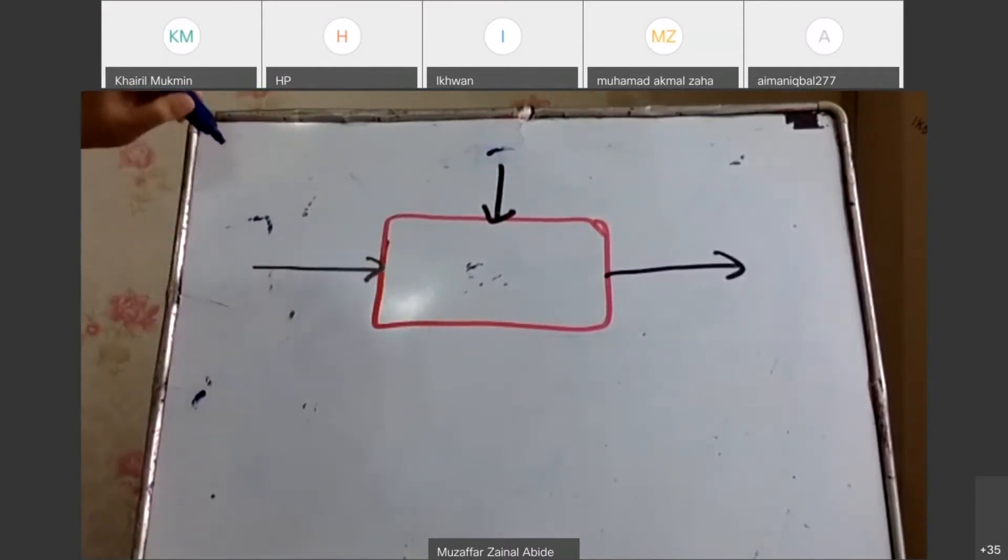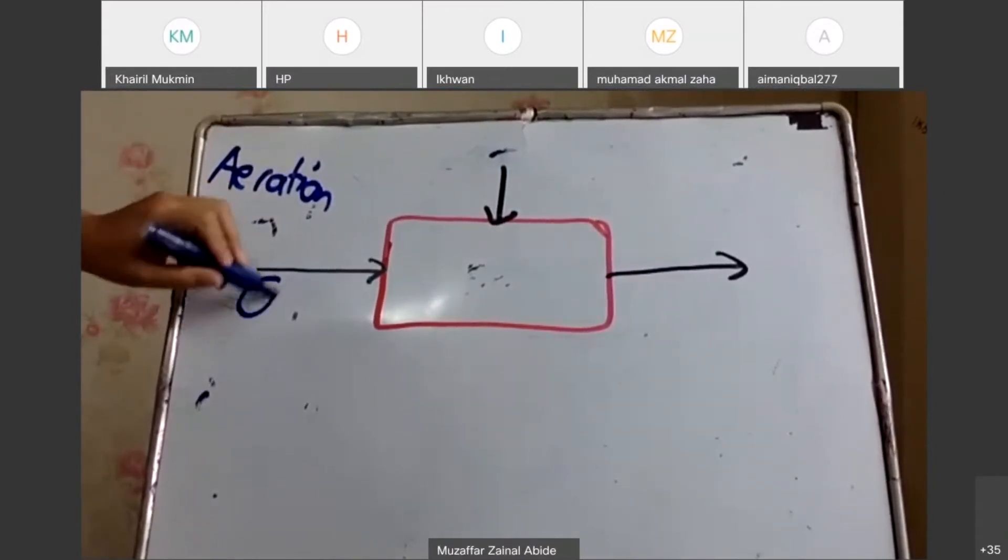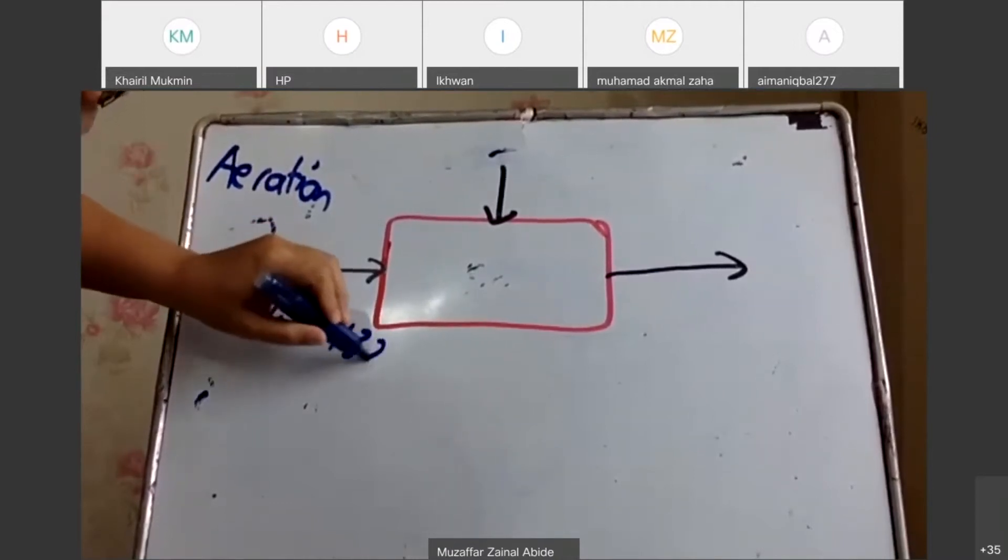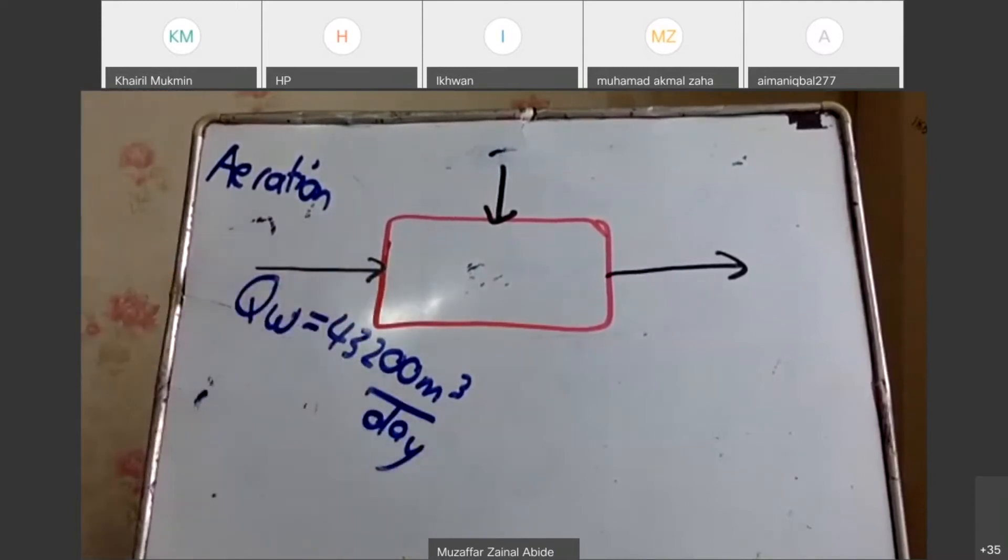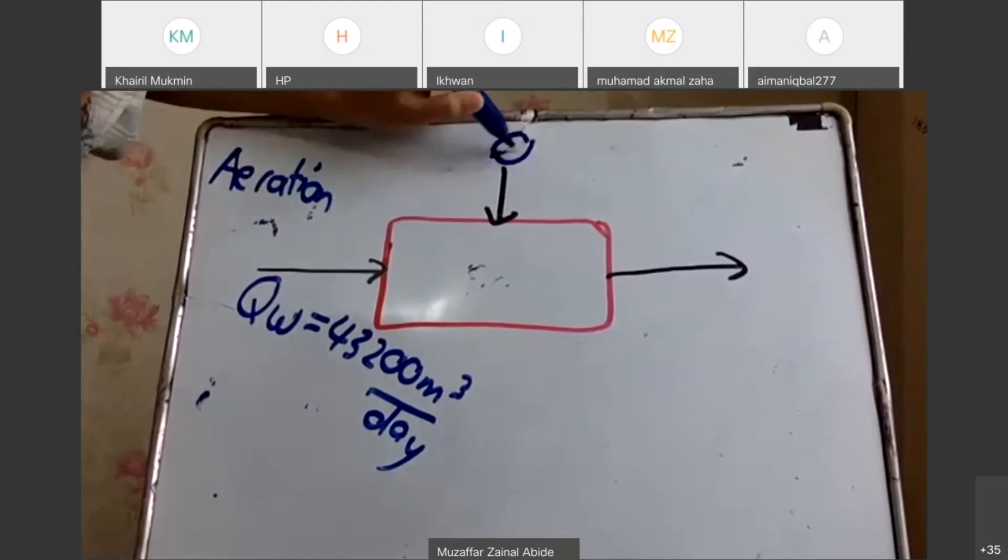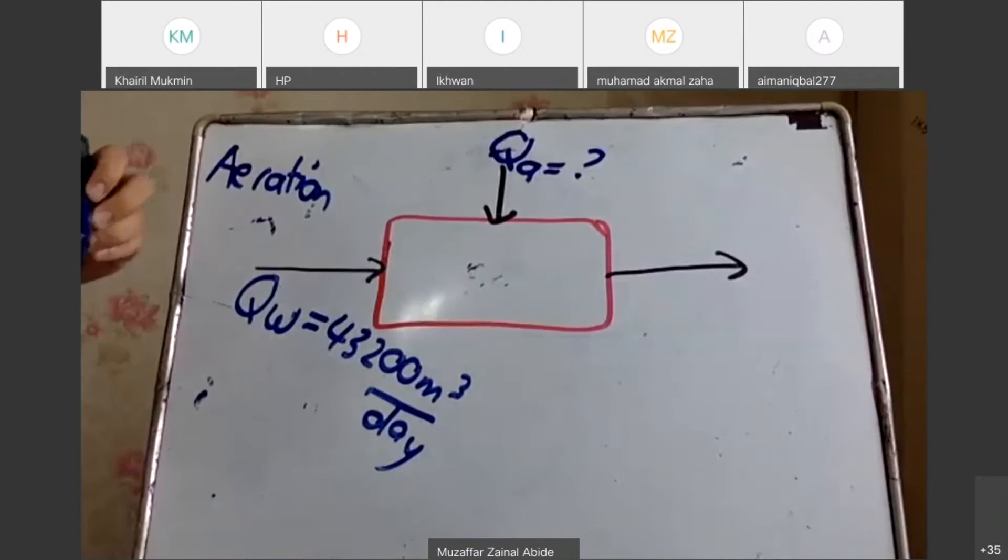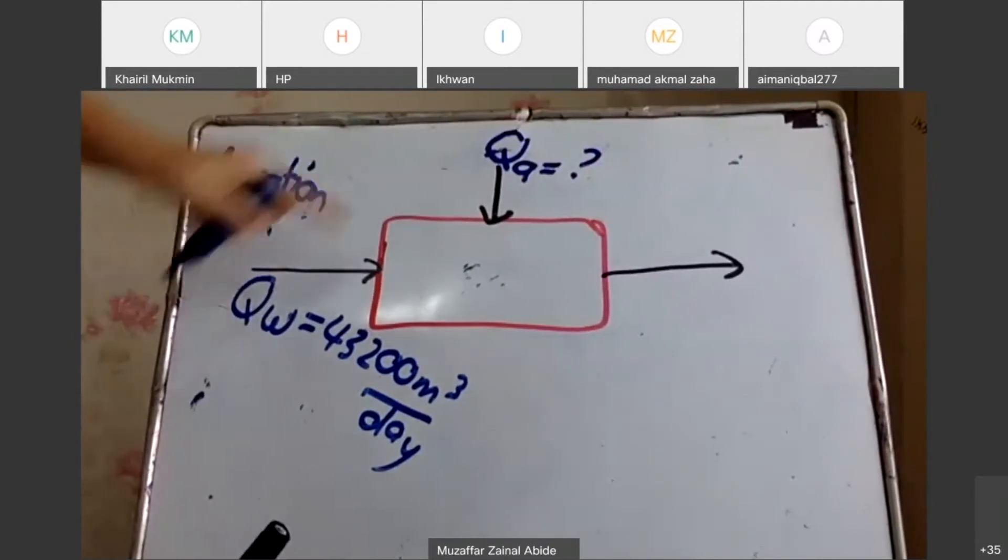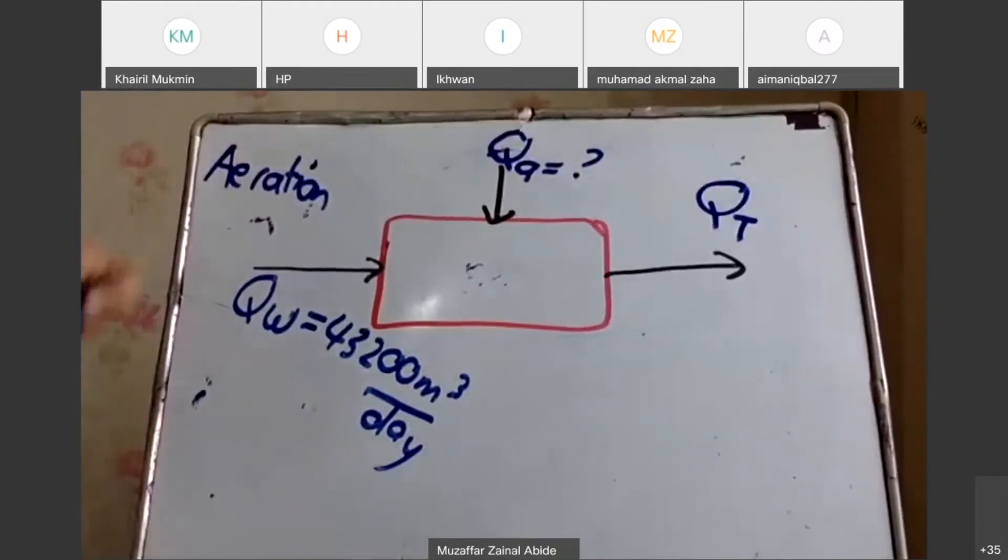So these are the diagrams. This is the water from aeration. The flow rate, I put it as QW, and that is 43,200 meters cube per day. The flow rate. And then there's something that you'd like to know - the flow rate for alum, something that you'd like to know. Is that clear? And then you have QWater and QA, Q alum, and this one I label as QT, Qtotal. That is another parameter that you need to know.